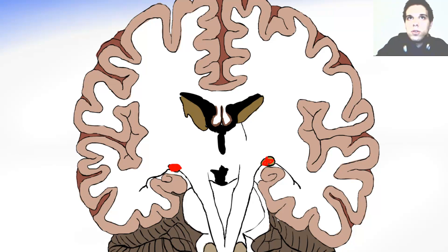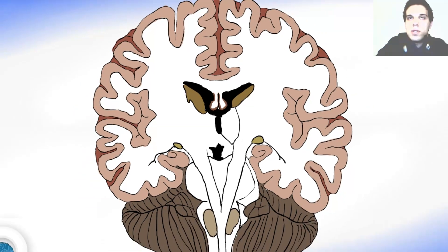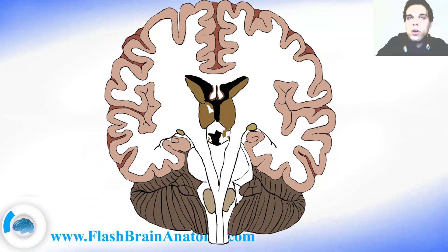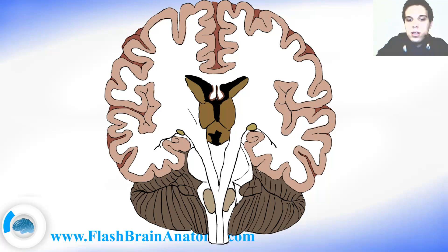Then we have the thalamus creating the walls of the third ventricle. And beneath that we have the interpeduncular fossa. The interpeduncular fossa can be seen from the outside — that is not inside of the brain. To see this, check out my lesson about the mesencephalon or the midbrain.